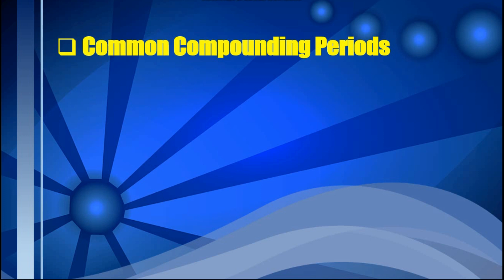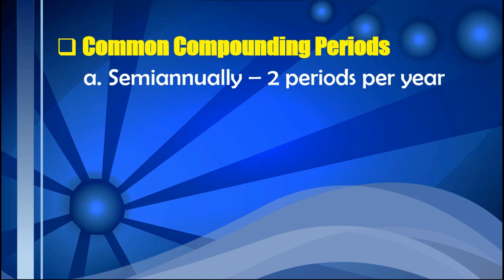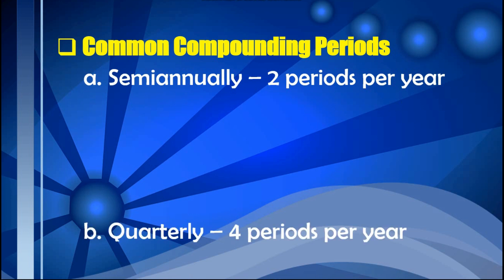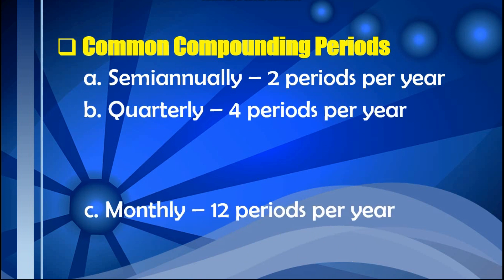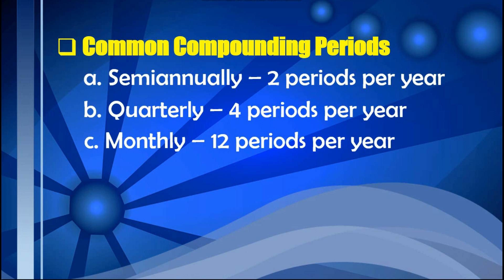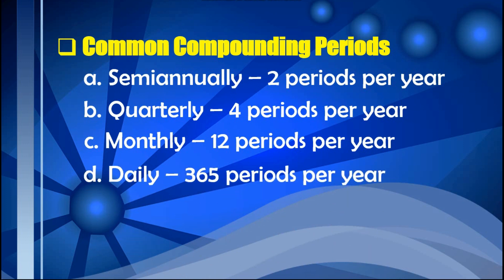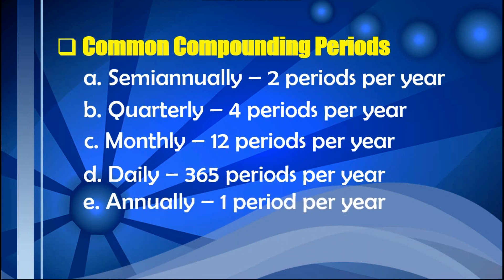The common compounding periods are: semi-annually, with 2 periods per year; quarterly, with 4 periods per year; monthly, with 12 periods per year; daily, with 365 periods per year; and the commonly used compounding period, annually, with 1 period per year.